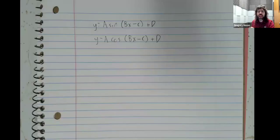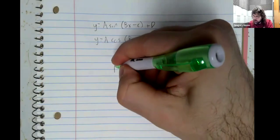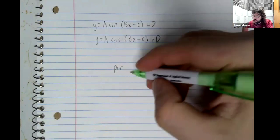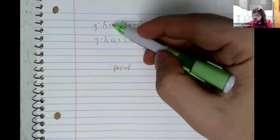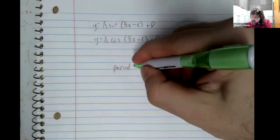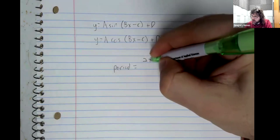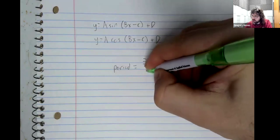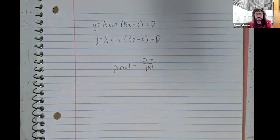But how does B affect the period? Well, for a sinusoidal function, whether it's the sine or the cosine, the period is 2π divided by the absolute value of B.